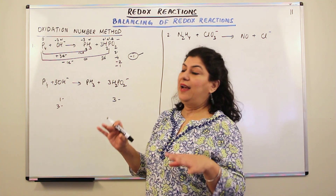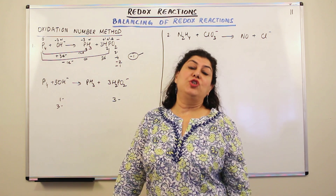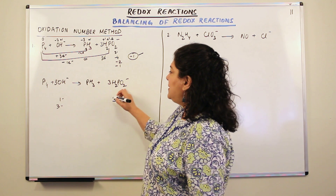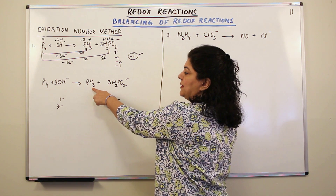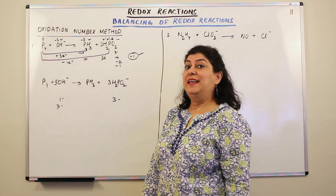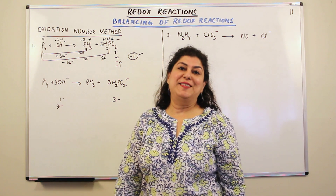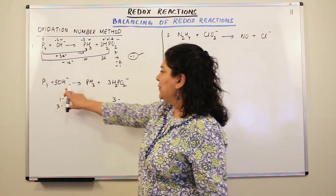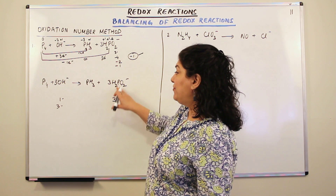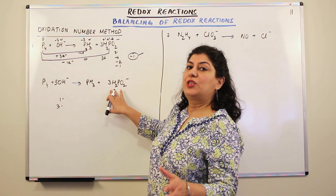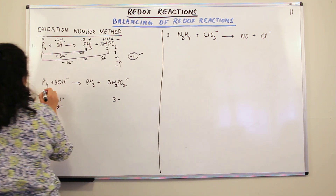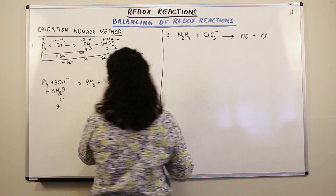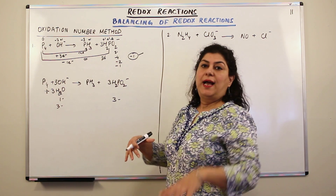After balancing the charges, we add water molecules to balance the hydrogens. On the reactant side: three OH gives three hydrogens. On the product side: three times two hydrogens from H2PO2 is six, plus three from PH3 gives nine hydrogens total. I have nine hydrogens on the product side and only three on the reactant side. Three cancel out, leaving six unbalanced hydrogens. Six hydrogens make three water molecules, so we add three H2O to the reactant side.